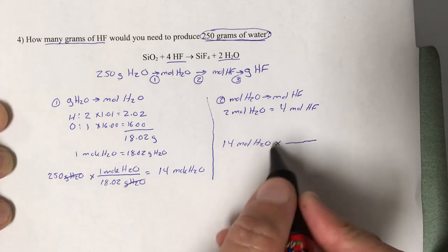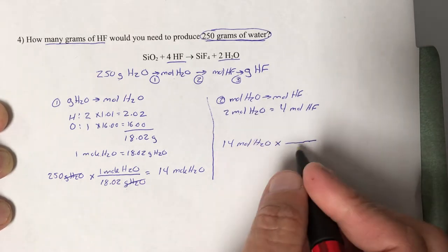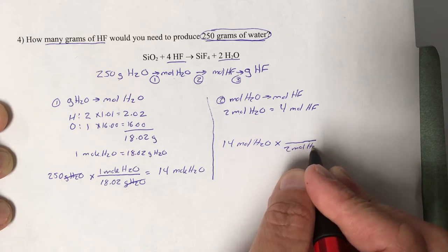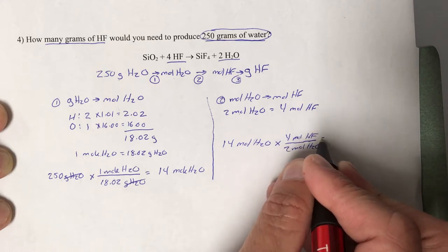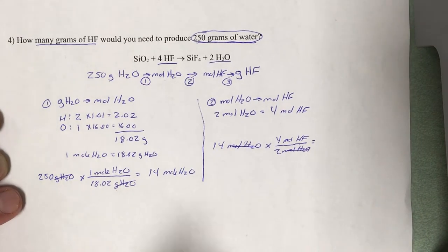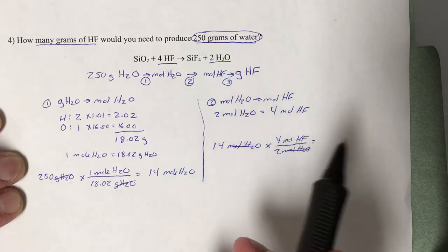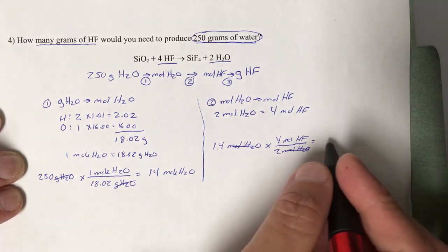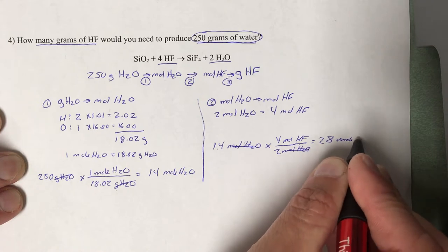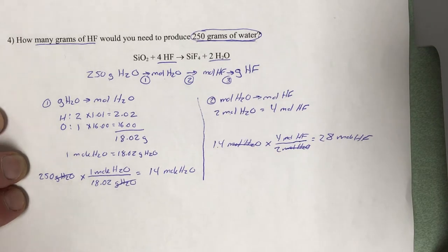In this case, it's the formula we're trying to cancel. It's the water we're trying to cancel, so we've got to put the water on the bottom and put the hydrogen fluoride on the top. Moles of water cancel out, just like we wanted them to. We're left with moles of hydrogen fluoride. Now we have numbers on the top and on the bottom. We'll multiply by numbers on the top, divide by numbers on the bottom. So we'll take 14 times 4, then divide by 2. That gives us 28 moles of hydrogen fluoride.